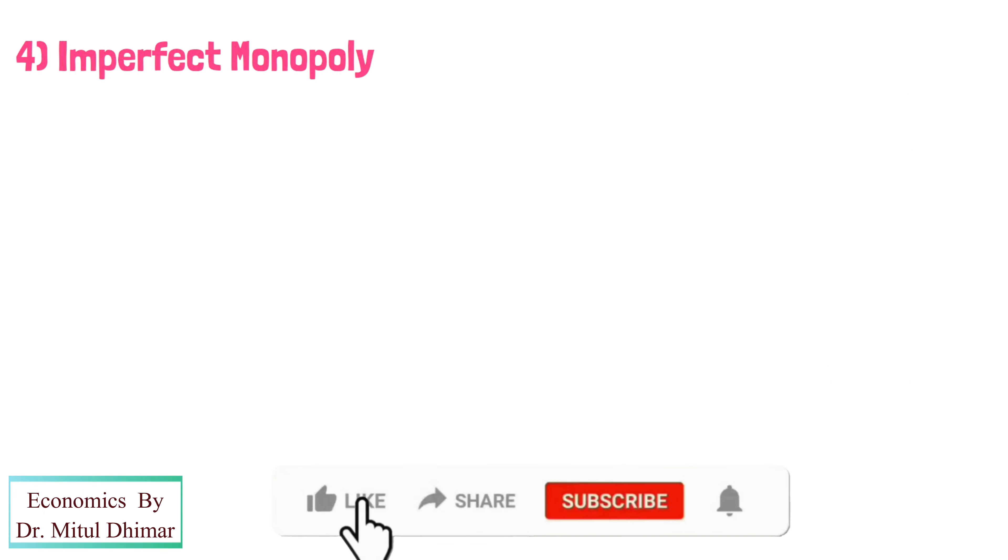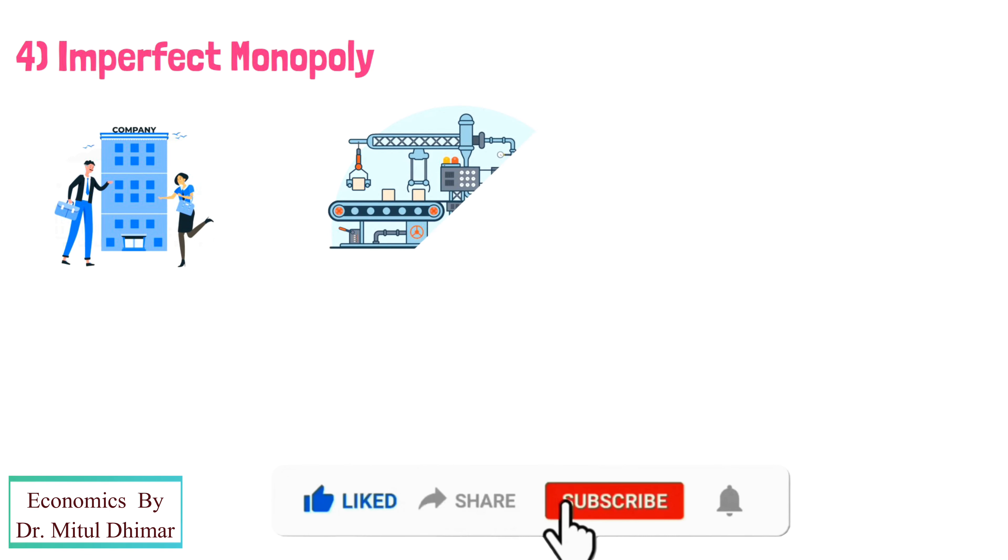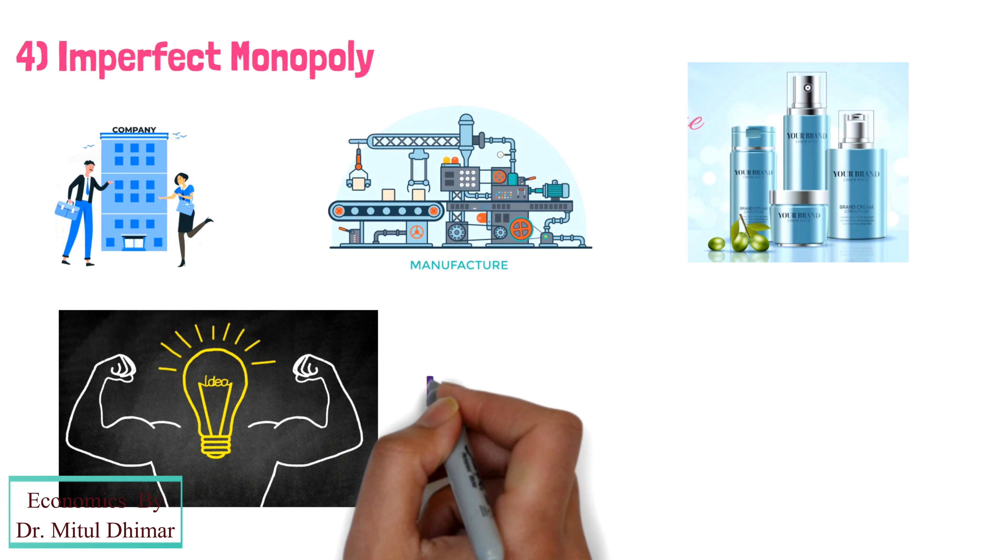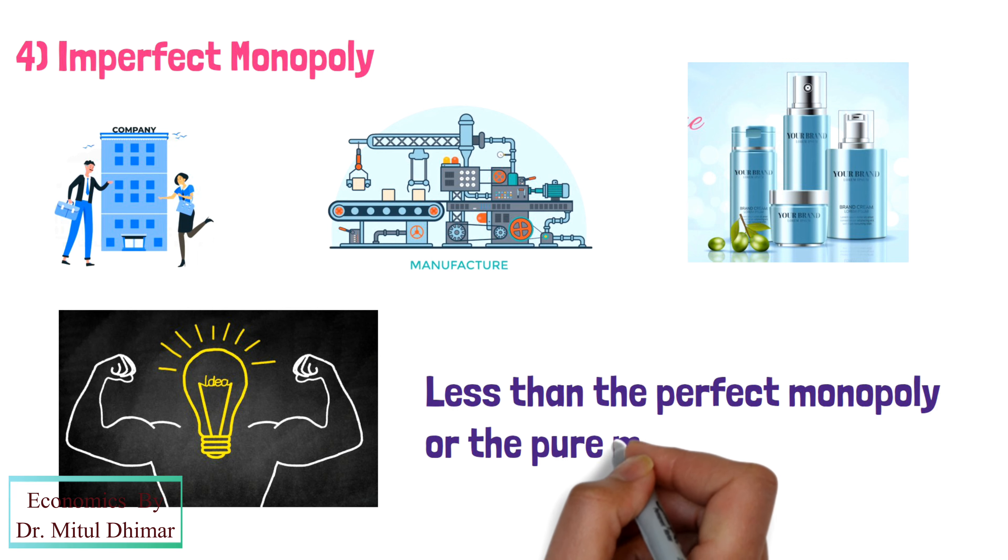4. Imperfect monopoly. Imperfect monopoly is a single firm that produces a commodity having no close substitutes. The degree of monopoly power is less than the perfect monopoly or the pure monopoly.